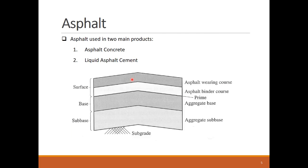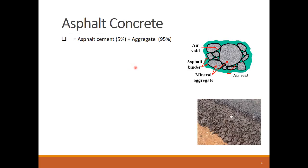Asphalt is used in two main products for constructing flexible pavement: asphalt concrete and liquid asphalt cement. Asphalt concrete is made of asphalt cement and aggregate. The amount of aggregate in the asphalt mixture is generally 90 to 95 percent by weight and 75 to 85 percent by volume. This large aggregate proportion is due to the fact that the axle load on the asphalt pavement is primarily carried by the aggregates in the mix.